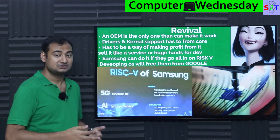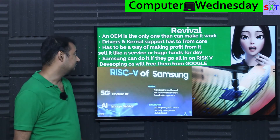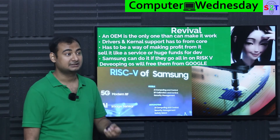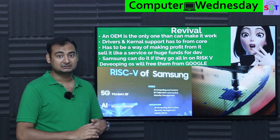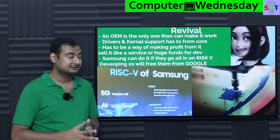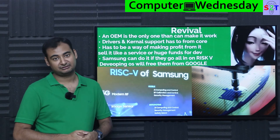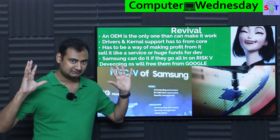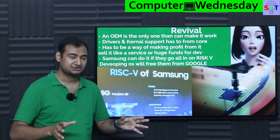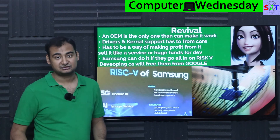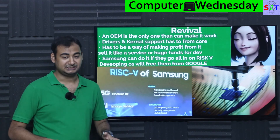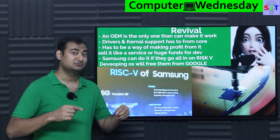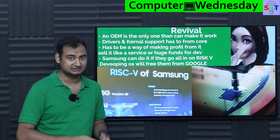In desktop, nobody wants to pay for it, so it dies. In mobile phones, same thing — nobody wants to pay for it, so it dies. How can it be done? You can sell it as a service — buy a two-year or three-year package. Or it has to have huge funds for development, like a Linux Mobile Foundation with at least a few billion dollars — which is how much Apple and Google pour into making their operating systems.